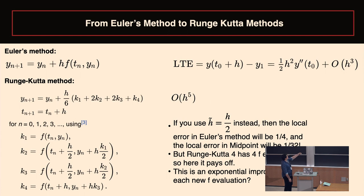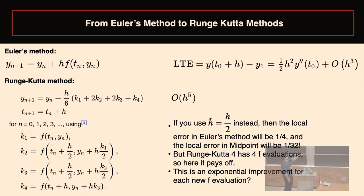This is where a lot of undergrad numerical analysis courses stop, and they say: this is Runge-Kutta's fourth order method. Its local truncation error is O(h⁵). If you halve delta T, you get 32 times less error, but you only did four function evaluations. So this thing is absolutely great — use Runge-Kutta's fourth order method.